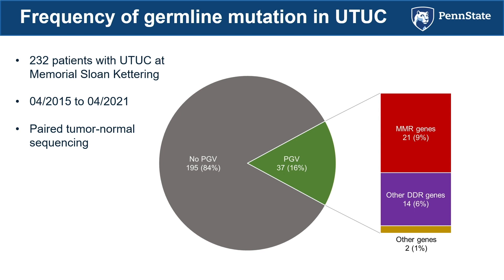At Memorial during my fellowship, we looked at 232 patients with upper tract cancer who had germline testing over a six-year period. The incidence of Lynch syndrome was 9%, most commonly MSH2. Over 16% of the cohort — one in six patients — had a pathogenic germline variant, and 9% had germline mutation in an MMR gene. Why does this matter? Family members who don't have cancer can qualify for genetic evaluation, often for free. There are prophylactic surgeries to mitigate cancer risk. Patients may qualify for immunotherapy if they have advanced cancer. And there are chemoprophylaxis options for colorectal cancer — high-quality trials of aspirin as prophylaxis for colorectal development in Lynch syndrome patients who haven't yet developed colorectal cancer.